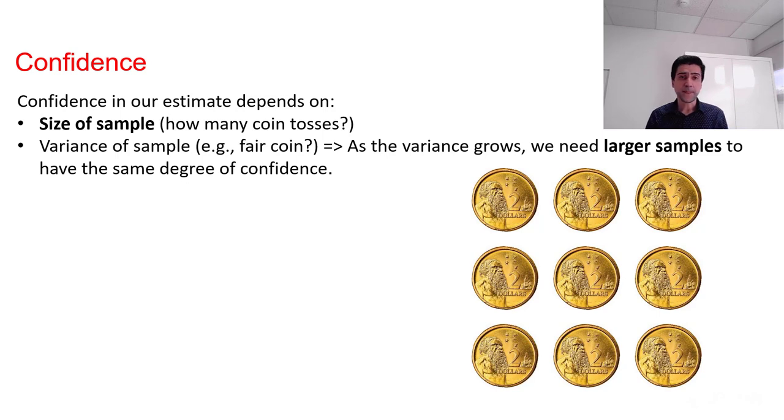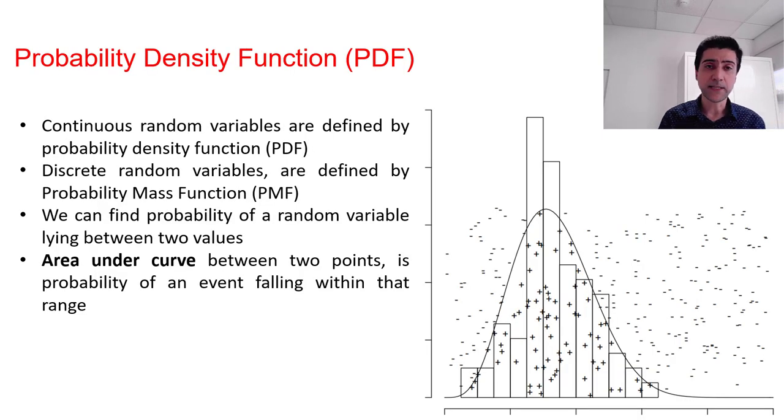There are important concepts in statistics that we should know. First of all, probability density function, or PDF, which is related to continuous random variables. And it is shown in this figure. For discrete variables, we can have probability mass function or PMF. And using those two, we can find the probability of any random variables between two values. And how that probability is calculated? It is the area under the curve between the two points of interest that we are considering.